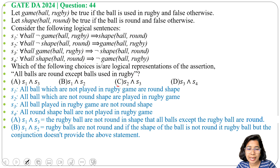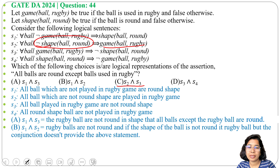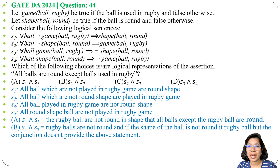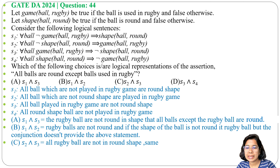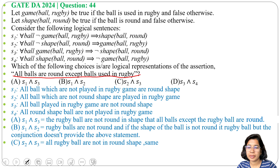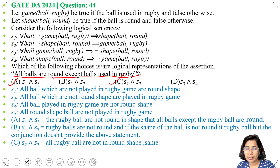Option C is S2 and S3. S2 states: for all balls, if a ball is not round, it is played in the rugby game. S3 states: for all balls, if a ball is played in the rugby game, it is not round. Together, S2 and S3 give the same meaning as 'all balls are round except balls used in rugby.' So S2 and S3 is also a correct answer. Option A is correct, option B is not correct, and option C is correct.